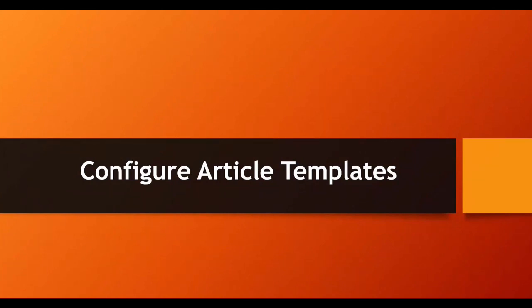So what are article templates? Article templates are like, for example, if someone is creating a knowledge article, they can select the template — like how they can create knowledge articles on what type, like known error or standard templates. We have known error templates, document templates, or anything — any templates they want to configure, they can configure it.